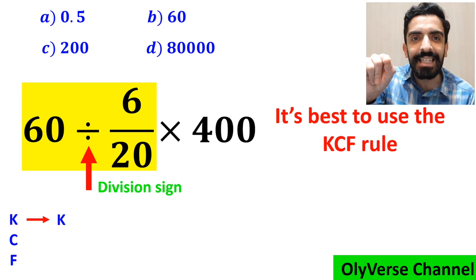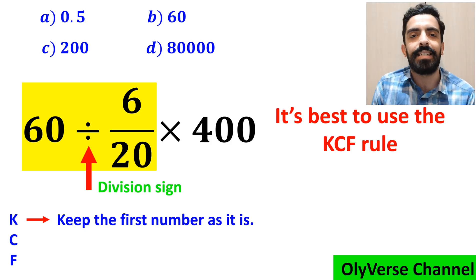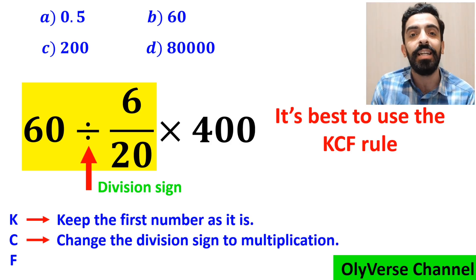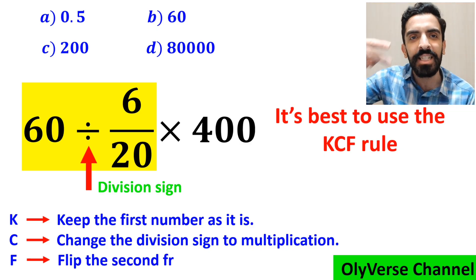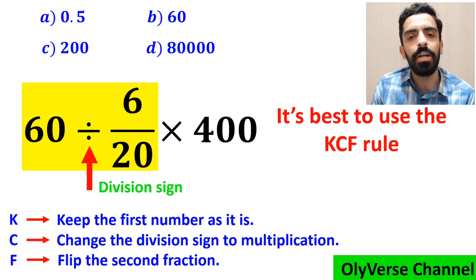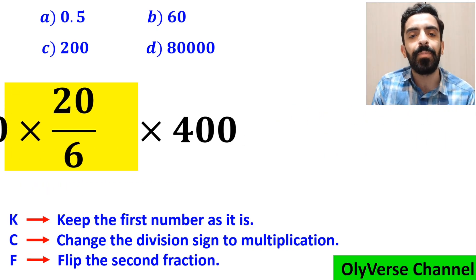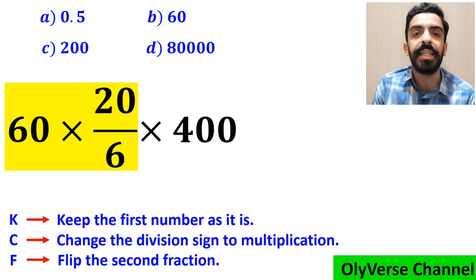In this rule, K stands for keep the first number as it is, C stands for change the division sign to multiplication, and F stands for flip the second fraction. So we remove the highlighted part and replace it with 60 multiplied by 20 over 6.